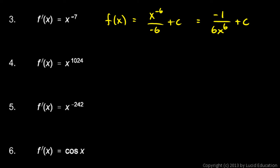Number 4, f prime of x is x to the 1024, so f of x will be x to the 1025 over 1025, plus the constant of integration, plus c.